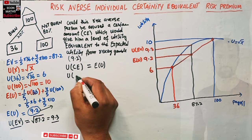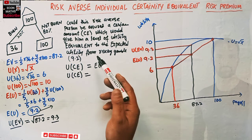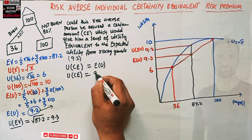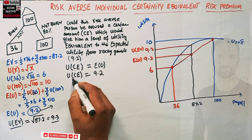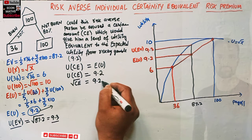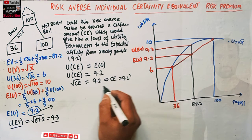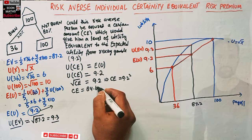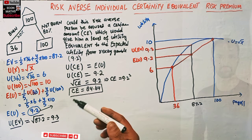We need to find a certain amount (CE) such that the individual is indifferent between the certain amount and the risky gamble. Using our utility function: √CE = 9.2, which implies CE = 9.2² = 84.64. The certainty equivalent is the amount of money for which an individual is indifferent between the gamble and a certain amount.